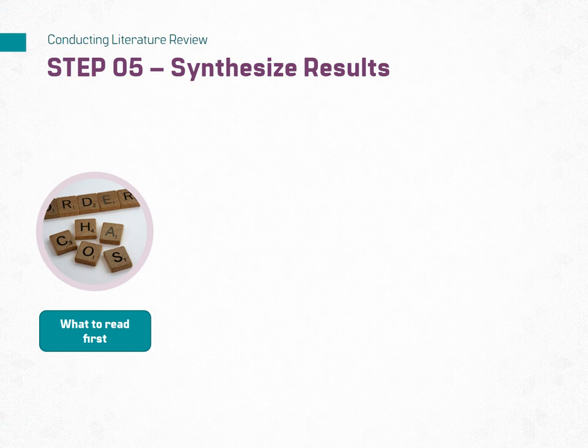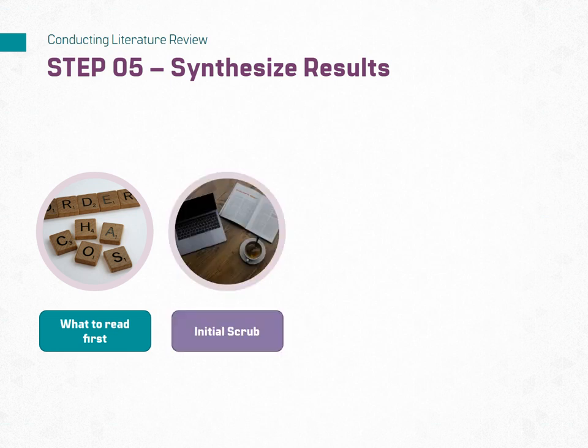Once you have selected your first five articles, begin with an initial review of their abstracts. This will provide you with an executive summary of the article's content, the conducted experiments, and a summary of the findings. If any of the articles don't appear to be relevant based on your review of the abstracts, make a note of it and set those articles aside. I don't recommend deleting any articles unless they are completely irrelevant — they may still hold importance later on, or someone may inquire about them, allowing you to explain why they were deemed not relevant.